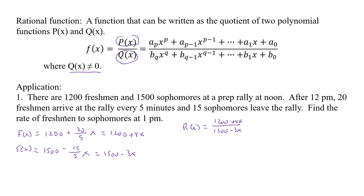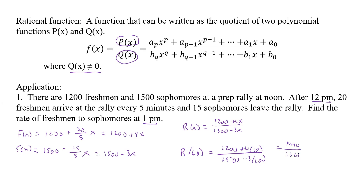Now find the rate of freshmen to sophomores at 1pm. Since 1pm is 60 minutes after noon, we find r of 60: that's (1200 + 4×60) / (1500 − 3×60) = 1440 / 1320. Plugging that into the calculator as a fraction gives us 12/11. So the ratio is 12 freshmen for every 11 sophomores at 1pm.